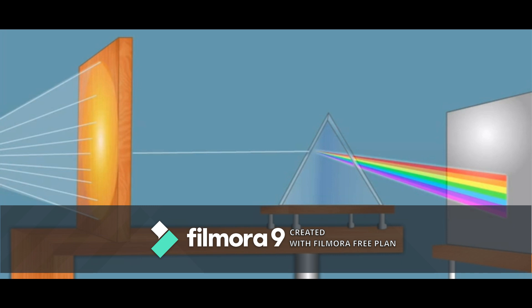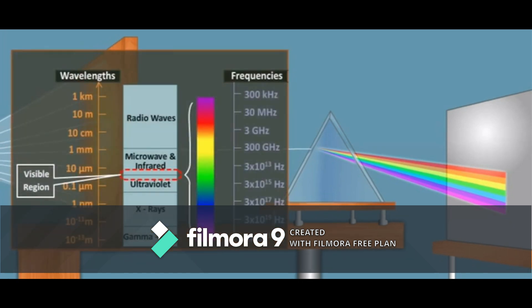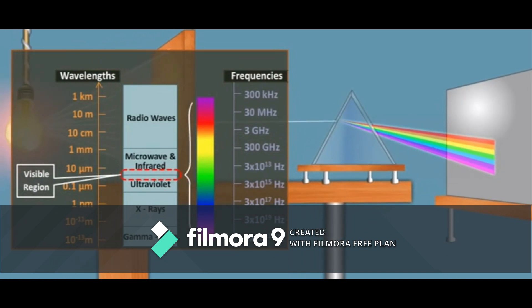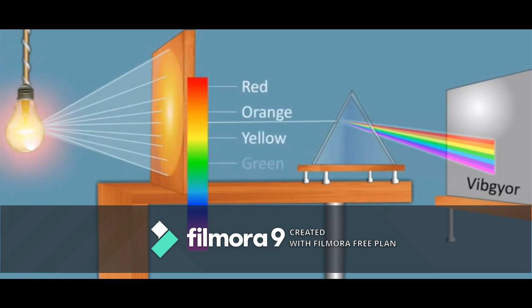The dispersion colors, when obtained on a screen, form a series of color bands known as a spectrum. The range of frequencies and wavelengths of radiations in this spectrum is shown on the frame. The spectrum so obtained has continuity of colors — one color merges into another without any gap or discontinuity — and such a spectrum is known as a continuous spectrum.